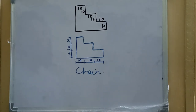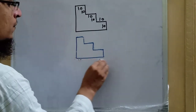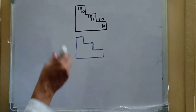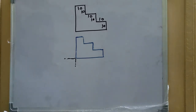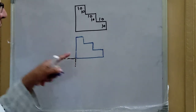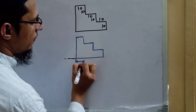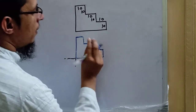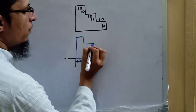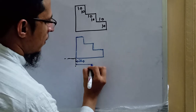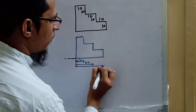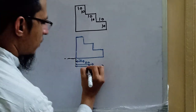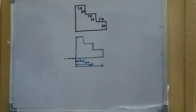Now for parallel dimensioning of the same figure, we take a reference line in the horizontal direction and a reference line in the vertical direction. In the horizontal direction, all dimensions are measured with respect to this reference line. The first dimension is 10; the next, measured again from the reference line, is 10 plus 10 equals 20; and the third dimension, also from the reference line, is 30.